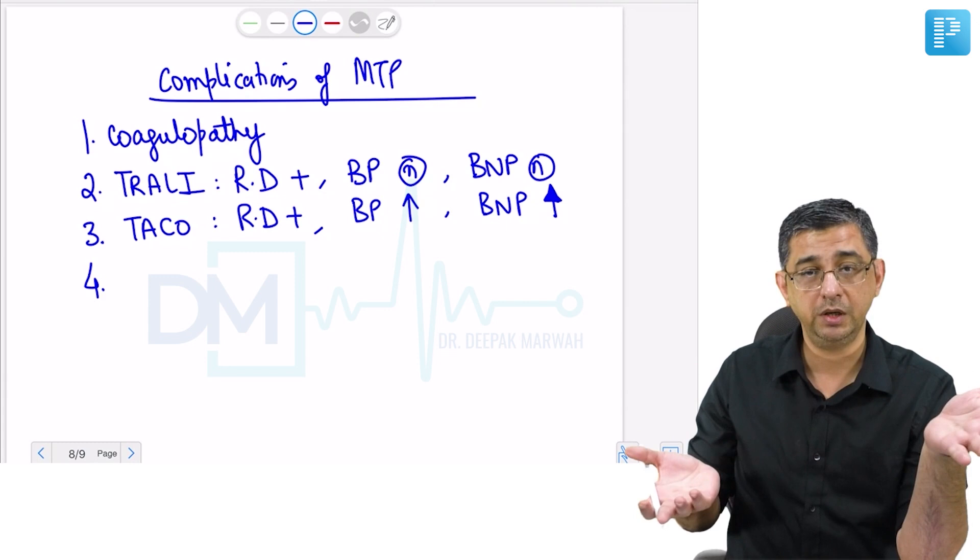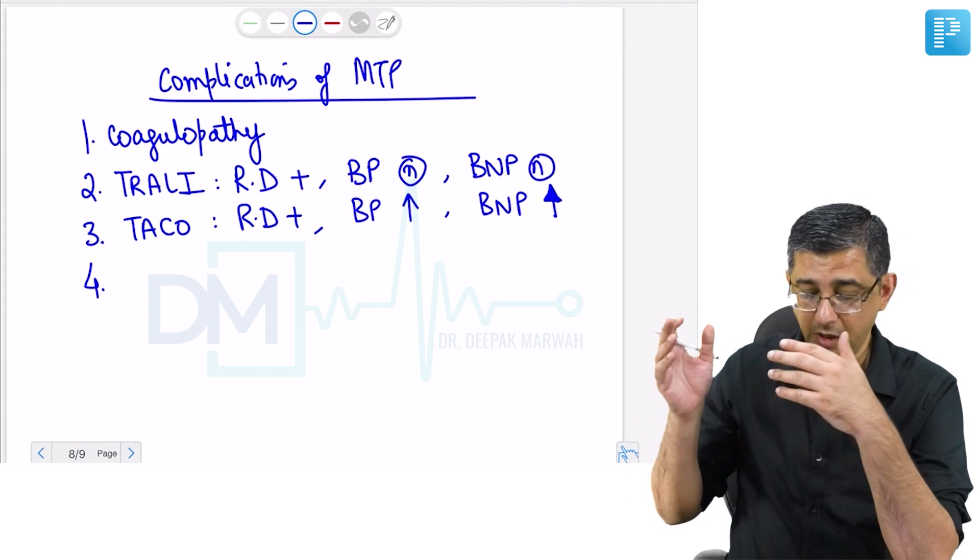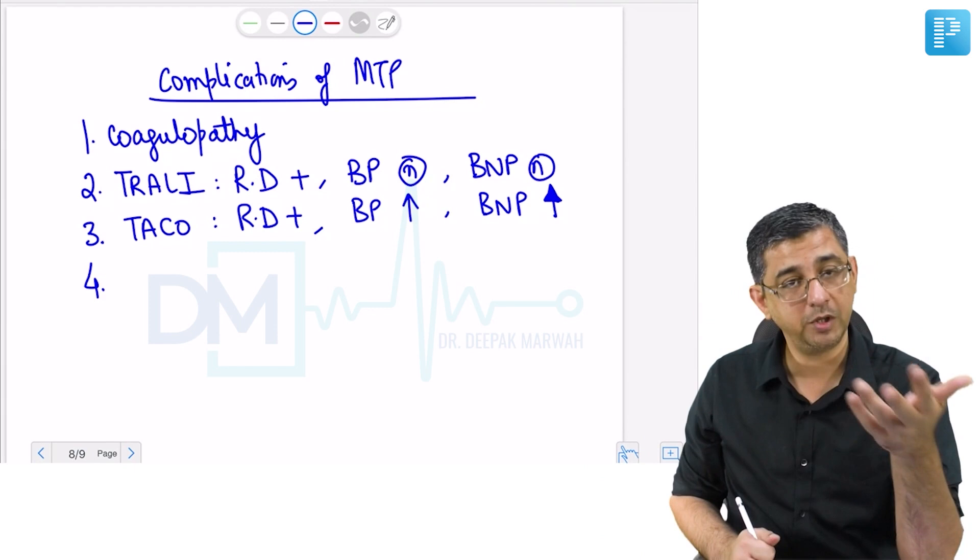If a transfusion protocol patient is having distress or increased blood pressure, cardiogenic pulmonary edema, or crepitations in the chest, these two possibilities have to be kept.